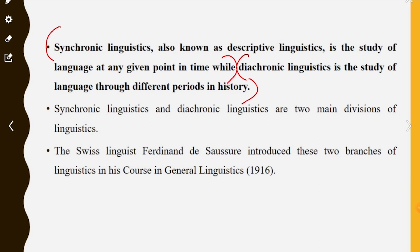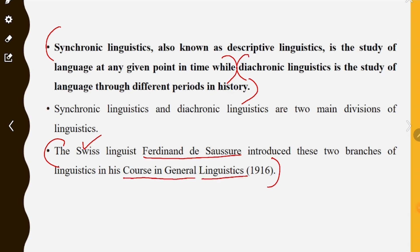The Swiss linguist Ferdinand de Saussure introduced these two branches of linguistics in his book Course in General Linguistics. This is an important question: who introduced these concepts? Ferdinand de Saussure, from Switzerland, introduced the concepts of synchronic and diachronic in his Course in General Linguistics.